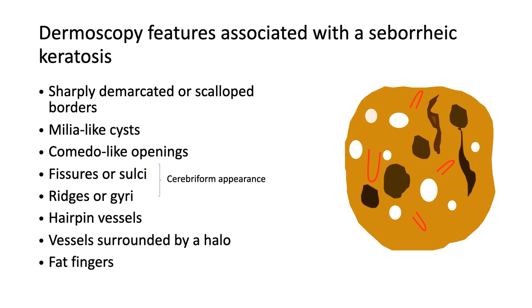Now let's look at seborrheic keratosis and the dermoscopic features associated with it. These include: sharply demarcated or scalloped borders, milia-like cysts, comedone-like openings, fissures or sulci, ridges or gyri, hairpin vessels, vessels surrounded by a white halo, and fat fingers. The combination of fissures or sulci and ridges or gyri is what we call the cerebriform appearance, which we'll review in a few slides.